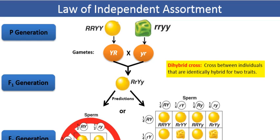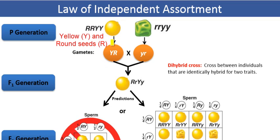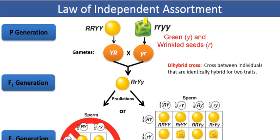These varieties differ in two characters of interest that we are looking at. For instance, on the cross we have on the screen right now, that's an example of a dihybrid cross between a plant with the dominant phenotype — yellow-round seeds, that's a dominant phenotype — and a plant that has the recessive phenotype, which is green wrinkled seeds.